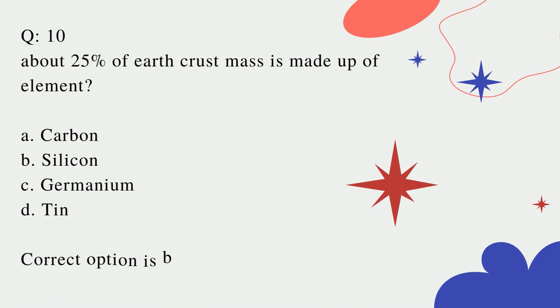Question number 10: About 25% of earth crust mass is made up of element? A. Carbon? B. Silicon? C. Germanium? D. Tin? Correct option is B. Thank you.